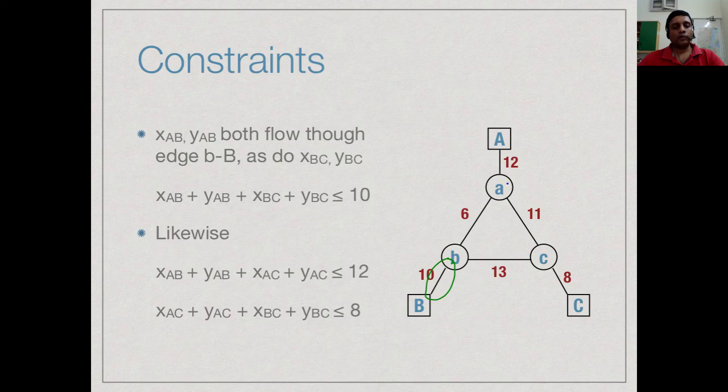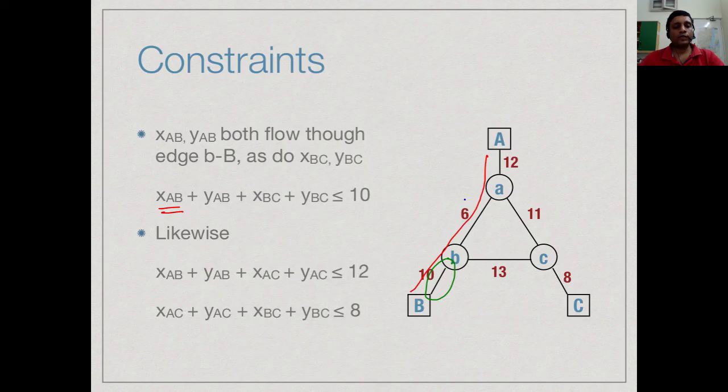Now, what routes does it lie on? It certainly lies on the short route A to B. So, it lies on the x_AB route. If any quantity which is assigned to x_AB will eat into this 10.